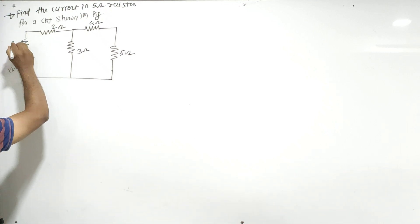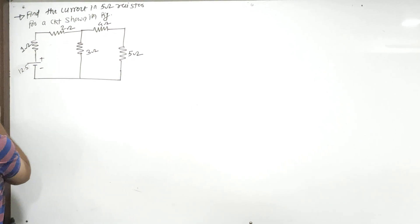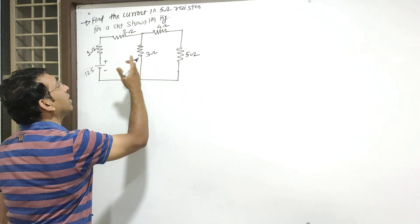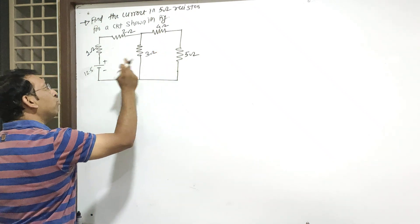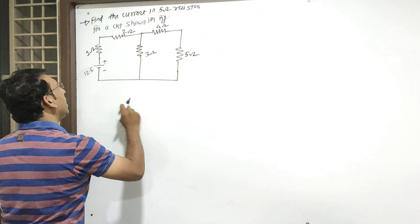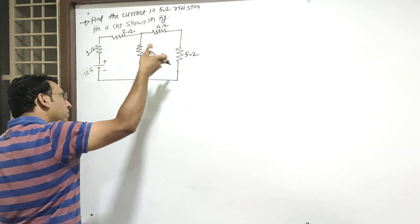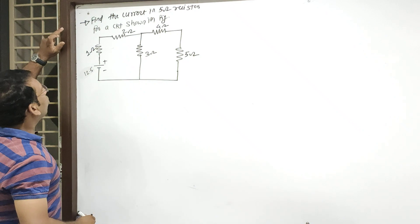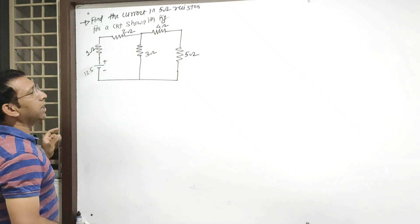इसलिए हम लोग अभी इस numerical को समझेंगे। इस problem की विशेशता क्या है? विशेशता यहाँ है — आप देखें, यहाँ battery नहीं है। अब तक दो battery थीं — पहले दोनों के common terminal थे, फिर दूसरे problem में terminal चेंज किये, अब तीसरे problem में battery ही present नहीं है। तो उस battery को replace कैसे करें या कैसे solve करें — कोई tension लेने की ज़रूरत नहीं।